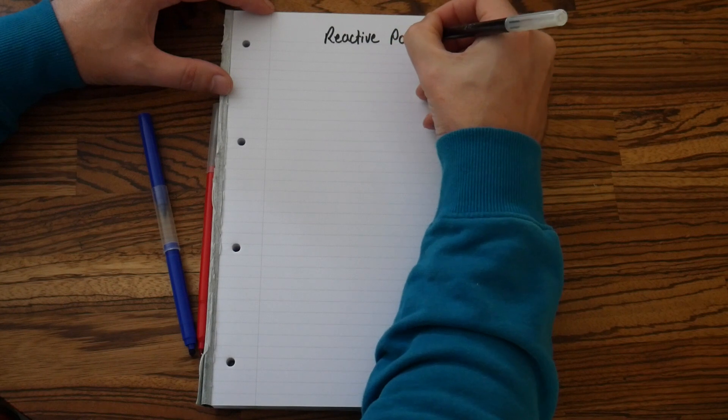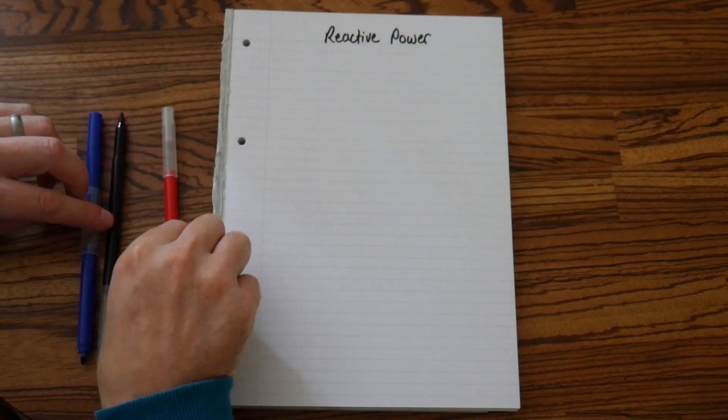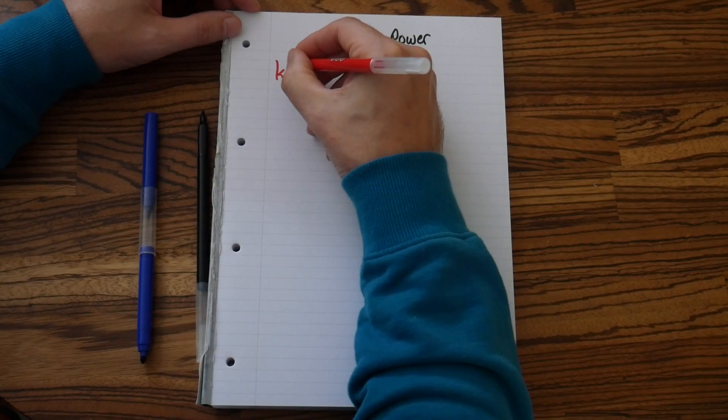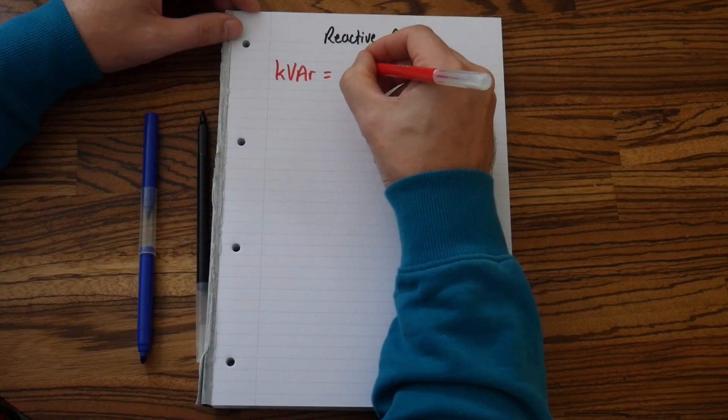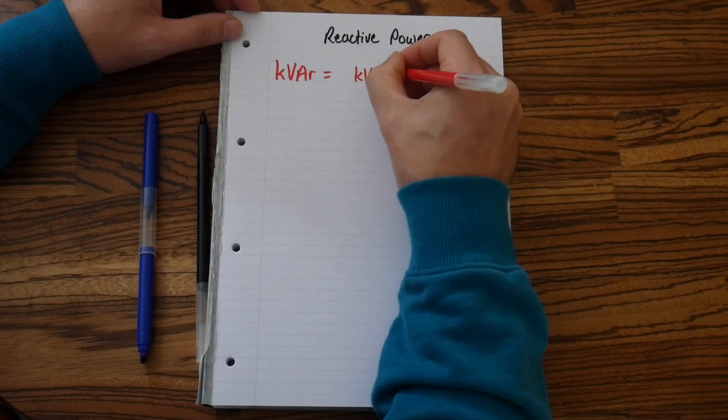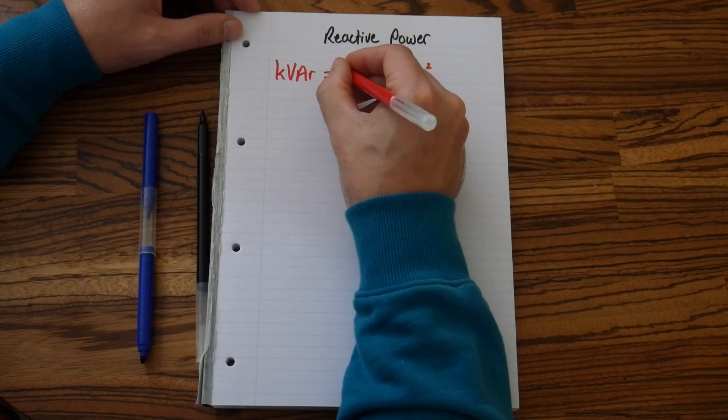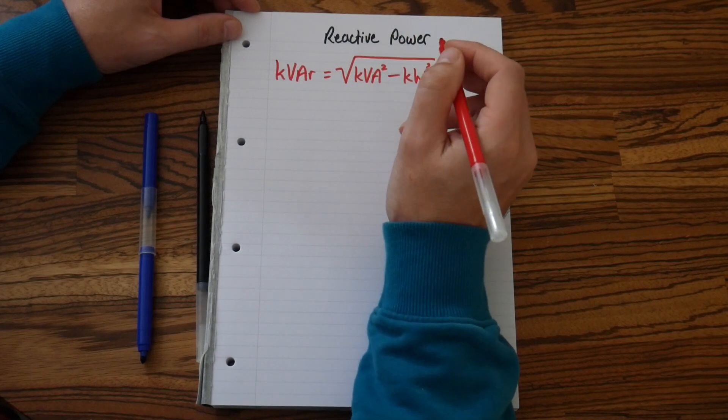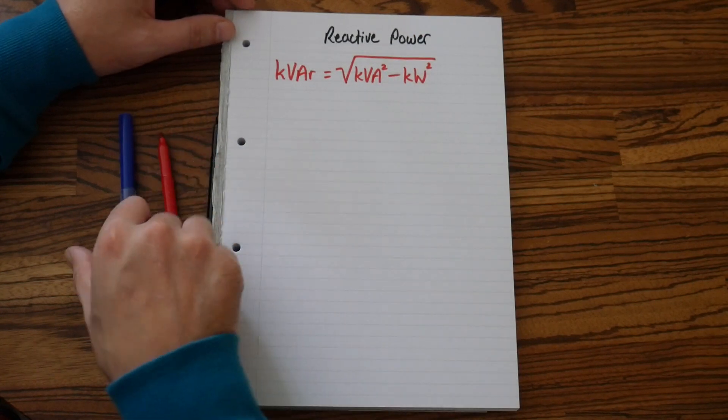Let's write our heading: reactive power. I'm going to switch pens for my formula. This formula is kVAR equals square root of kVA squared minus kW squared. That is the only formula we will use.